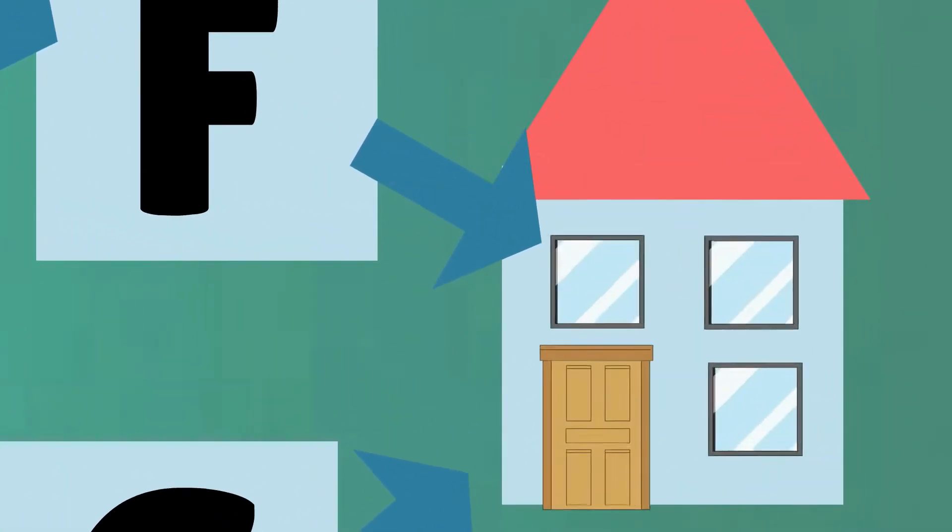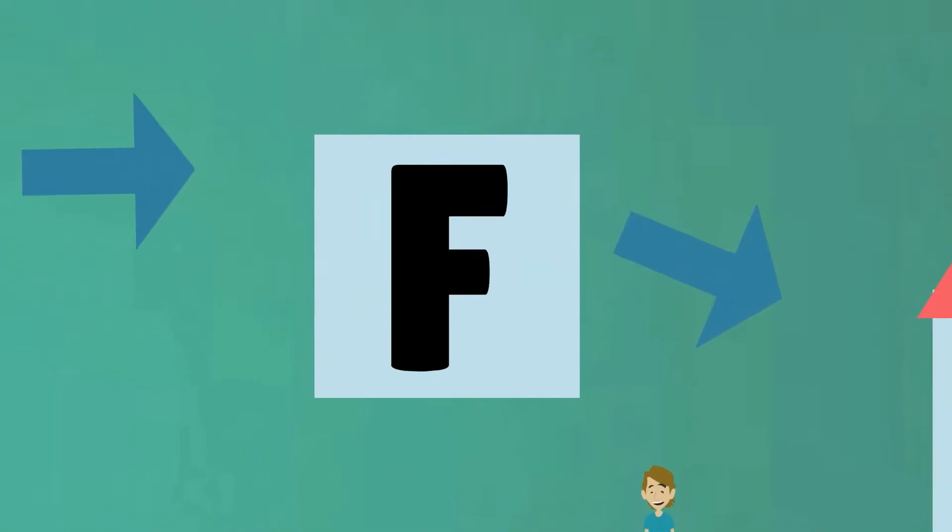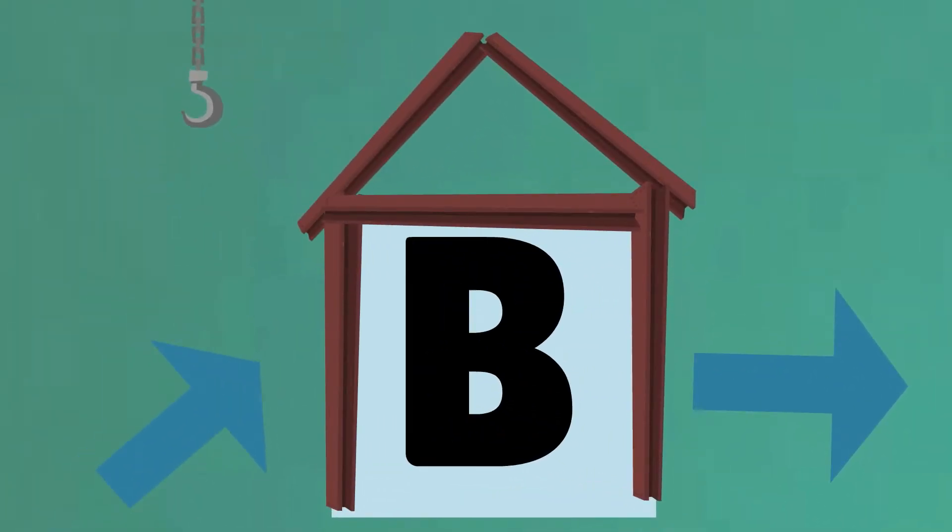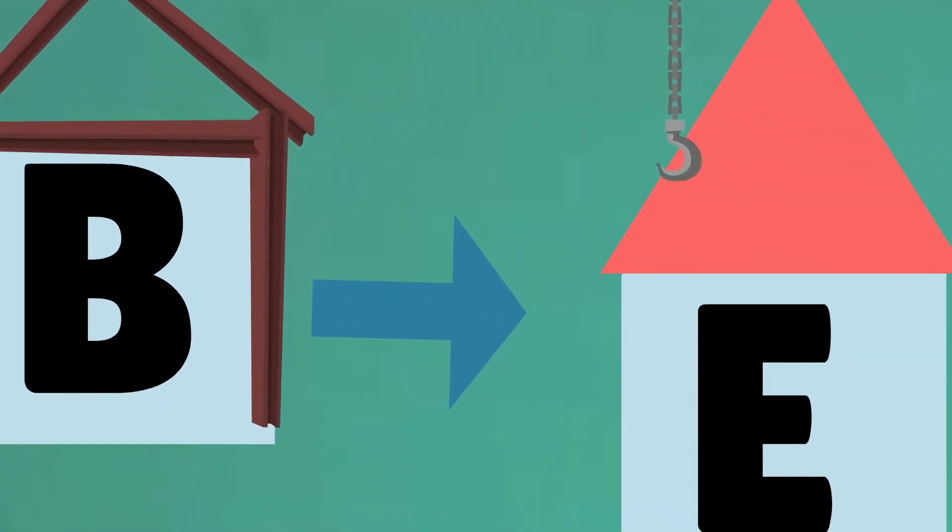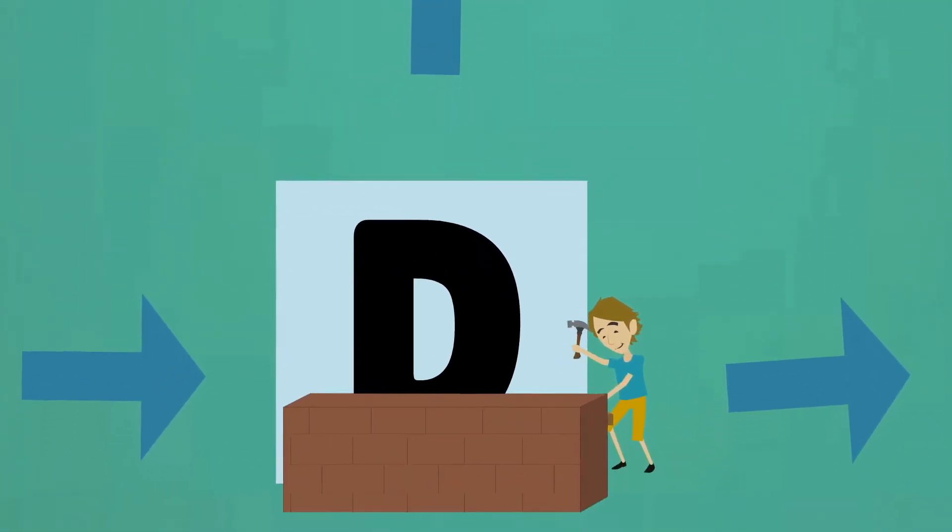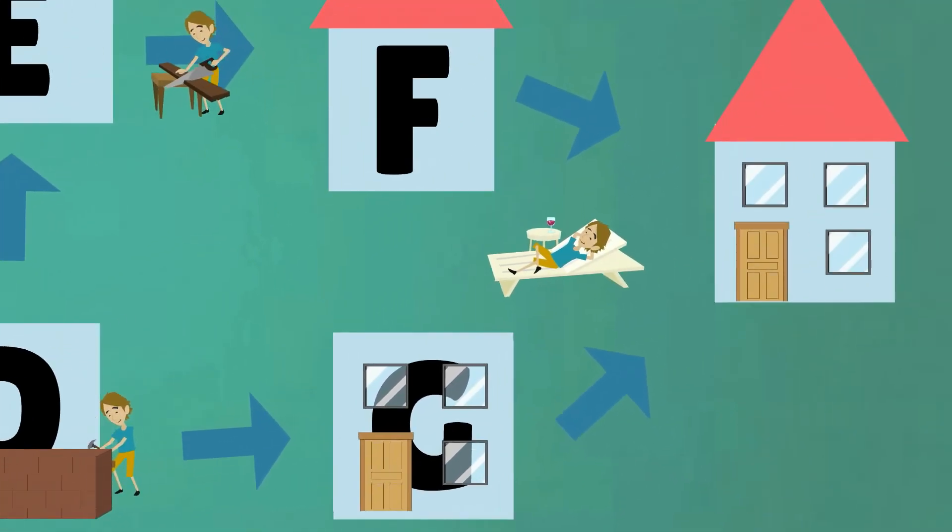Let's say that we are building a house. In this case, activity B, the framework, needs to be finished before the roof can be placed. But meanwhile, the walls also need to be built before the roof can be placed. When, eventually, both F and G are finished, activity H can start.